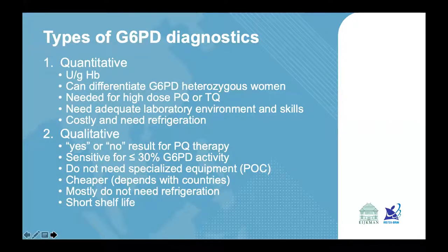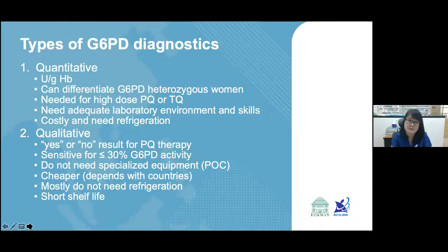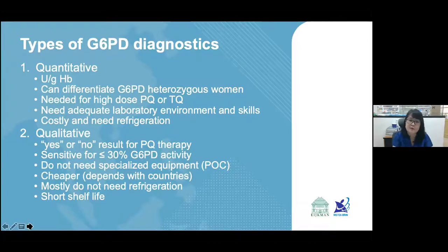Qualitative tests give a yes or no answer for primaquine therapy: deficient means you cannot give the therapy, and normal means you can. They are sensitive only for very deficient individuals, and intermediate activities are sometimes missed and considered normal. Most qualitative tests do not need specialized equipment, are cheaper, mostly do not need refrigeration, but because of this have a shorter shelf life.